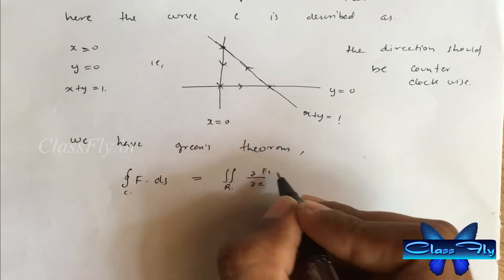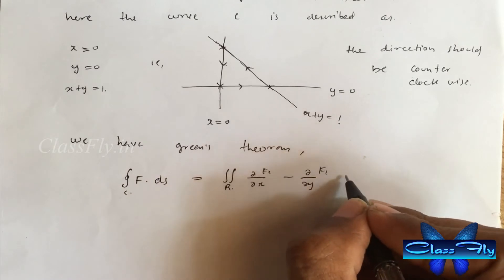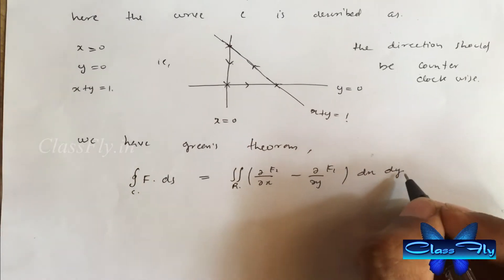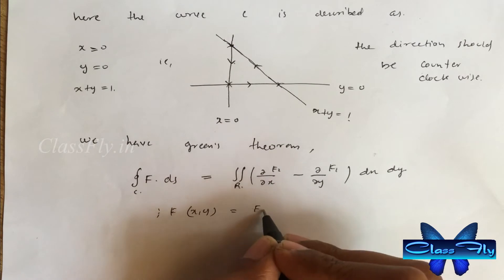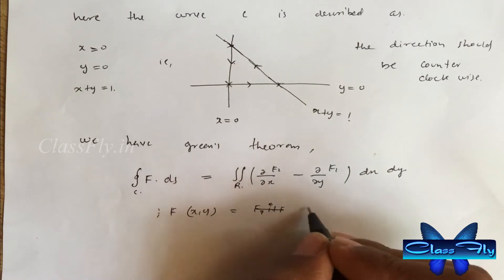We have Green's theorem. Closed integral c f dot ds equal to double integral dou by dou x of f2 minus dou by dou y of f1 dx dy where f of xy is f1 plus f2.